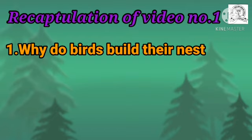Birds build different types of nests — some nests are very big, some are very small. Birds build their nests on trees, on the ground, nearby the seashore, on high rocks and high hills also. So birds build different shapes of nests and they build them in different places.